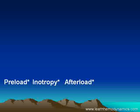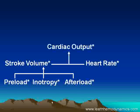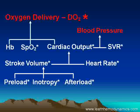Let's have a little look at how all these things fit together. Preload, inotropy and afterload are the three determinants of stroke volume. Stroke volume combines with heart rate to give us cardiac output. Cardiac output combines with systemic vascular resistance to give us blood pressure. But cardiac output also combines with oxygen saturation and hemoglobin concentration to give us oxygen delivery, and that's what we really want to know, because that's what keeps us alive.